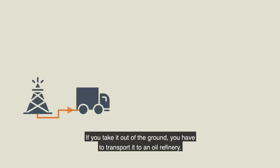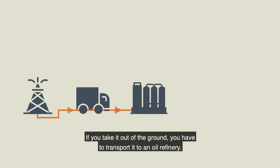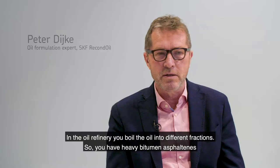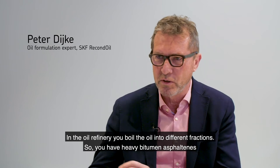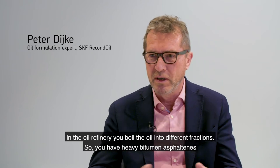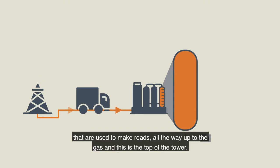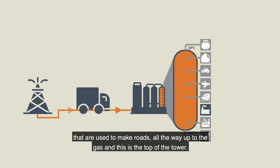If you take it out of the ground, you have to transport it to an oil refinery. And in the oil refinery, basically you boil the oil into different fractions. So you have the heavy bitumen asphalt things that you use to make roads, all up to the gas that's at the top of the tower.